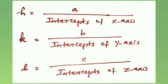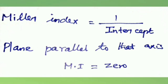K equals edge length b by intercept of the plane along the y-axis. Similarly, L equals edge length c by intercept of the plane along the z-axis.